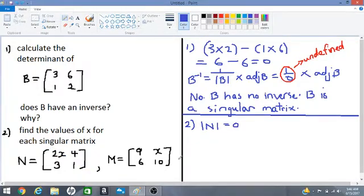2x multiplied by 1, subtract, 3 multiplied by 4. That should be equal to 0. So 2x times 1 is 2x, subtract, 3 fours at 12 is equal to 0. Let's solve this equation.